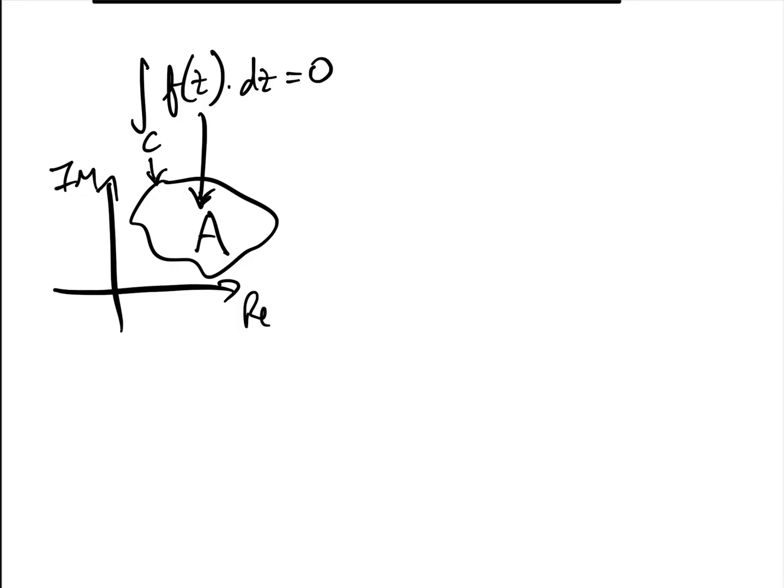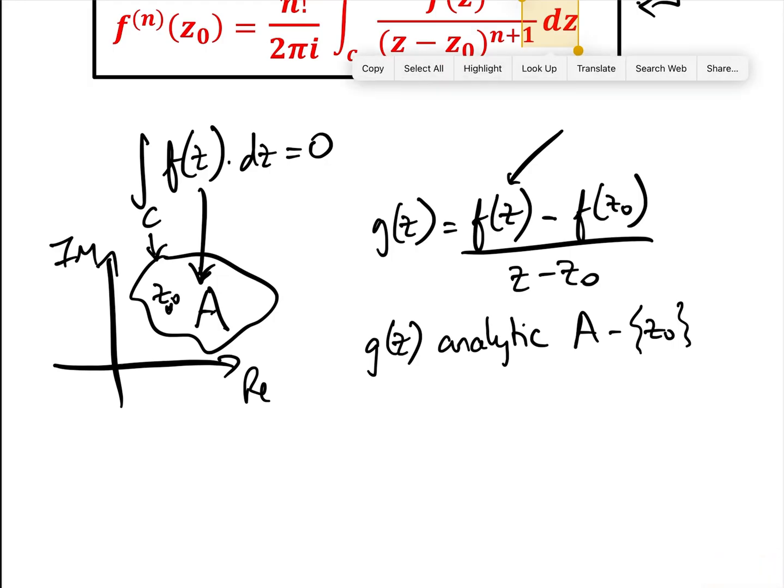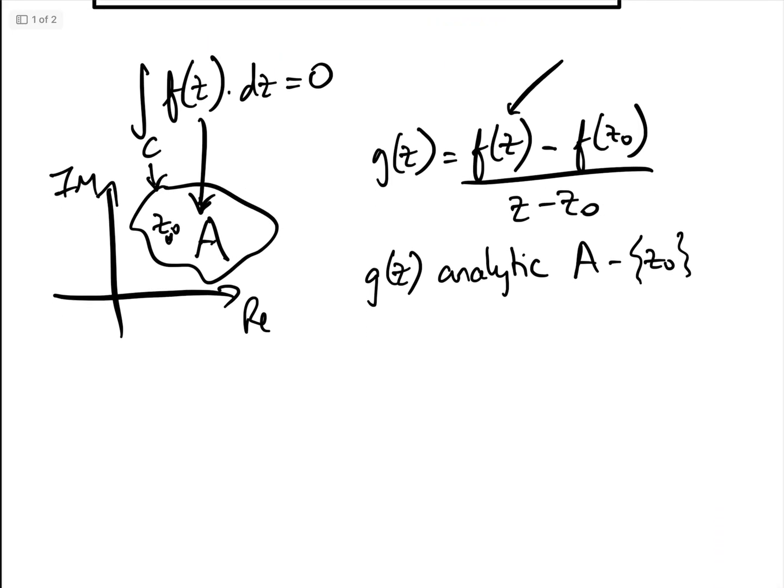So basically, let's now define a function g of z, which equals f of z minus f of z0, and let's put a point here, z0, which is inside the contour. So g of z is f of z minus f of z0 over z minus z0. Now, as we know that f of z is analytic everywhere within the region A, then we know that g of z is analytic everywhere in A minus, possibly, z0. We've just got to sort out z0.